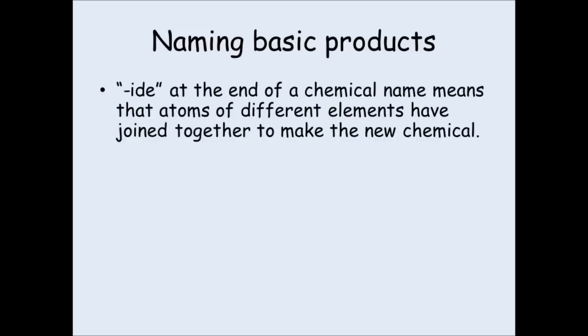Well, that's all well and good if you're told all of the chemicals. What happens if you have to predict what the products are going to be? Now we have specific ways of naming chemicals. Now you'll come across a lot of chemicals in your school career which end in -ide. They have -ide at the end of their name. Now when you see this -ide, this means that atoms of different elements have joined together to make a new chemical. -ide means elements have joined together.